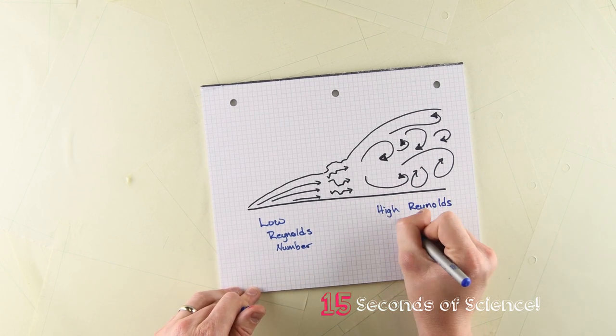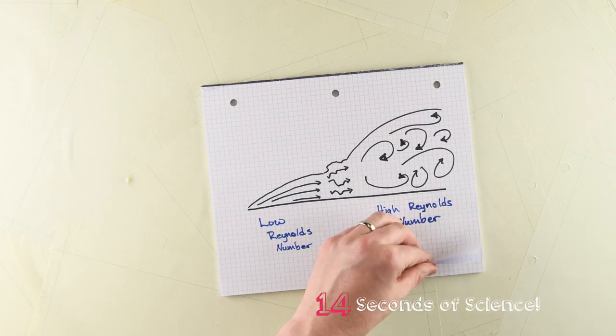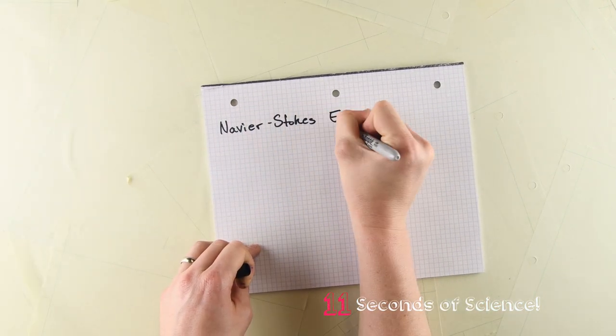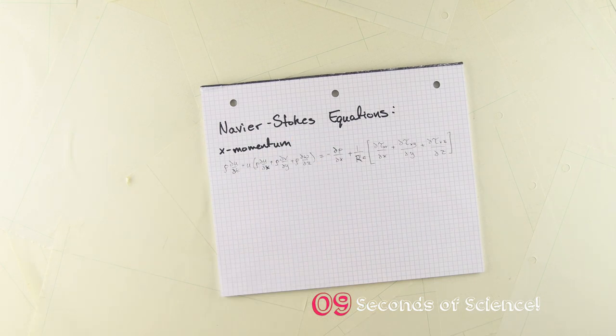But the Reynolds number just tells us if a fluid flow is turbulent, but not what it does when it is turbulent. For that, we need to look at the Navier-Stokes equations. And this is where things get a bit tough.